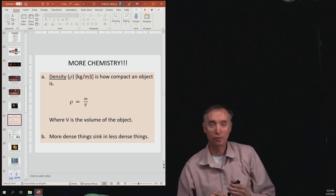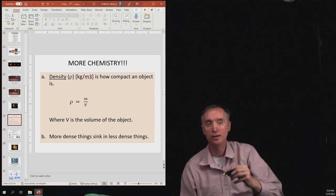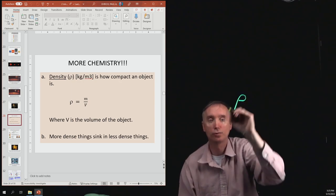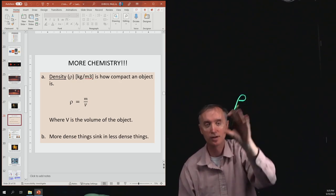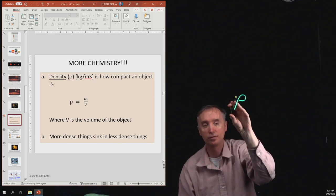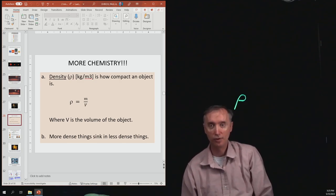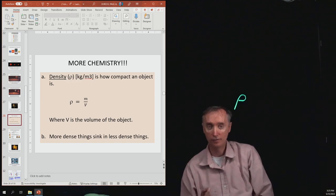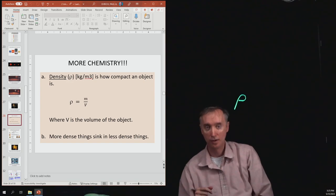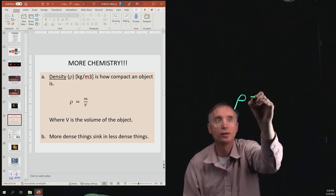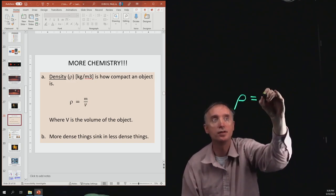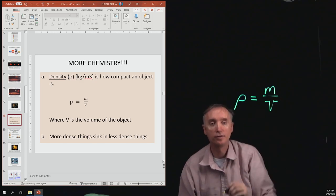Density is going to be abbreviated with a Greek letter called rho, as in row, row, row your boat. I know it looks like a P, but that's the Greek letter rho, and it's the abbreviation for density. Density is how compact an object is, so it depends on the mass of the object, m, but it also depends on the volume of the object. Let me write out the formula here, that density is equal to mass divided by volume.